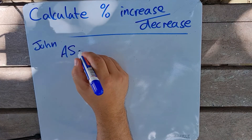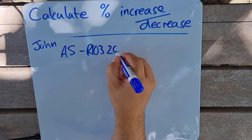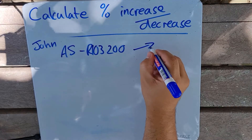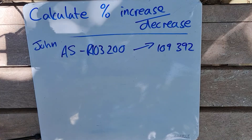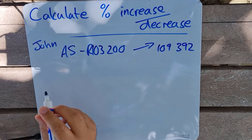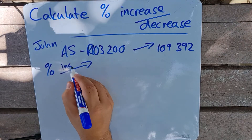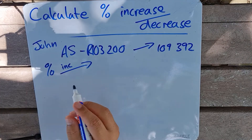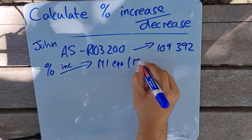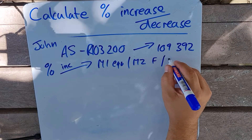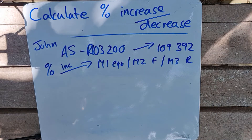Now let's look at another example. John's annual salary is 103 200 Rand, and it was increased to 109 392 Rand. We want to calculate the percentage by which his annual salary increased. So remember: Method 1 is an equation, Method 2 is a formula, and Method 3 is a ratio.